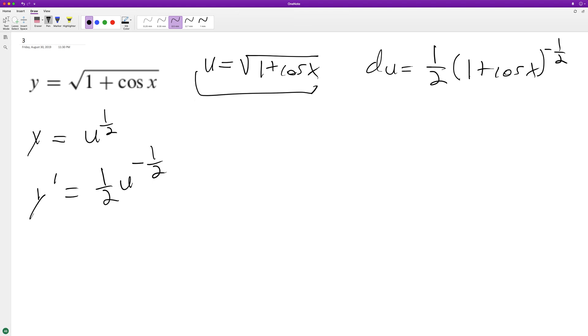So we can just sub back in all these quantities. So y prime will be equal to 1/2... and I forgot to put du here. One half, oh and I made another mistake - du should be 1/2, and then pull out the times negative sine x. Okay, so we have negative sine x.